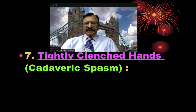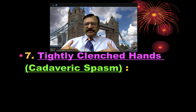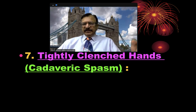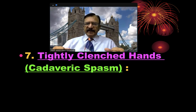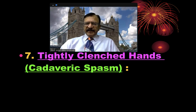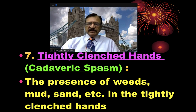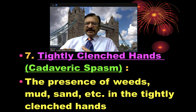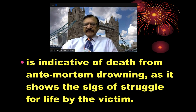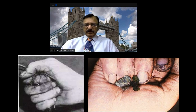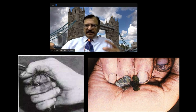About the tightly clenched hands and cadaveric spasm: as the drowning person is struggling, he tries to grasp everything, and as he is in an extreme emotional state the small muscles go into intense spasm — that is the cadaveric spasm. It is said to be the last volitional activity of death, a recording of the death. The presence of weeds, mud and sand in these tightly clenched hands is an antemortem sign, indicative of antemortem drowning as it shows the struggle for life by the victim. You can see in this picture that grass, weeds and leaves have been grasped in the tightly clenched hands.